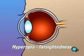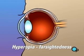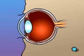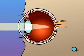Hyperopia, or farsightedness, occurs when the shape of the eye is too short. In this case, light rays are focused on a point behind the retina.